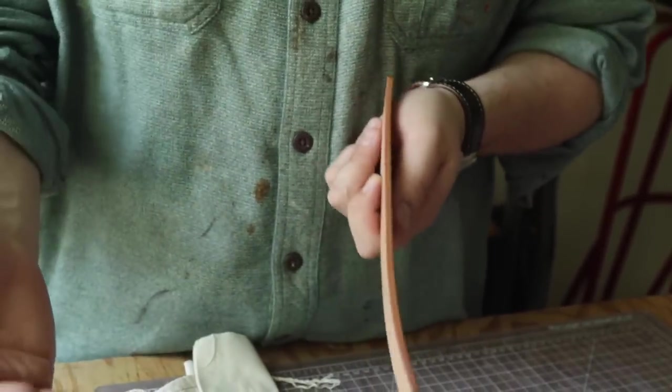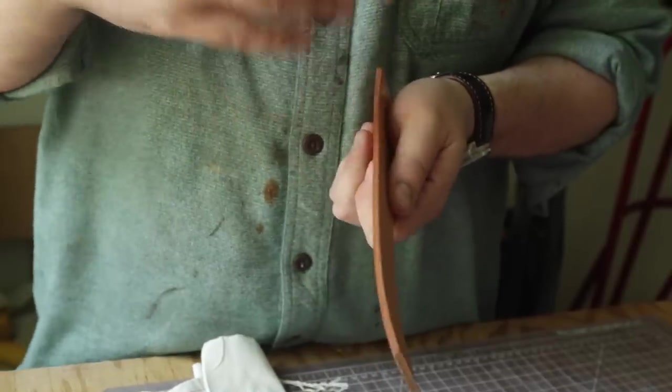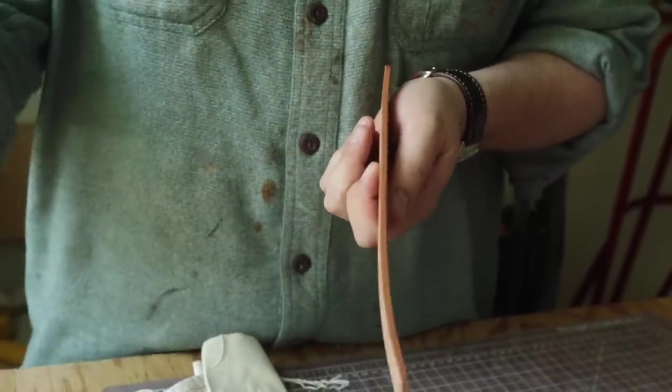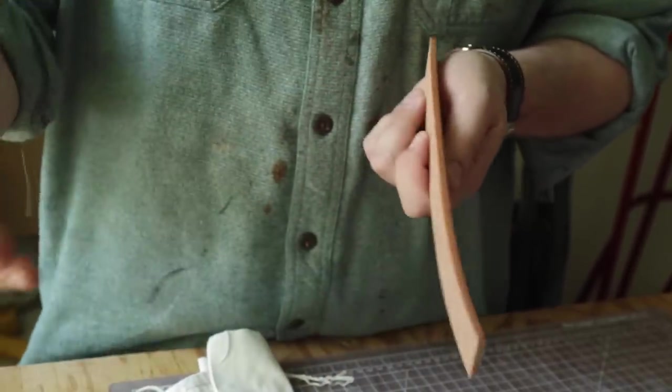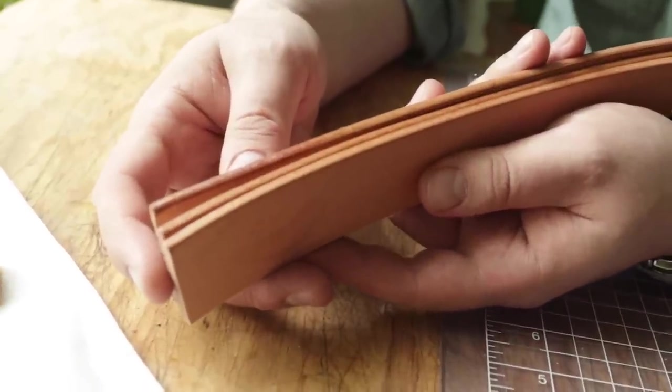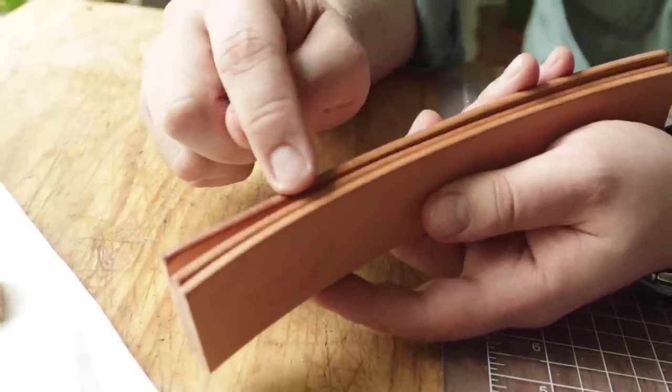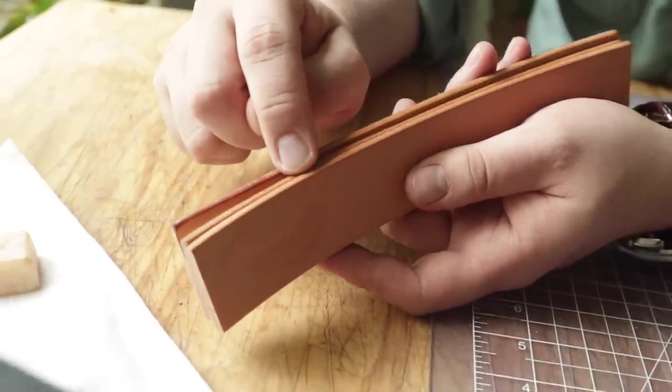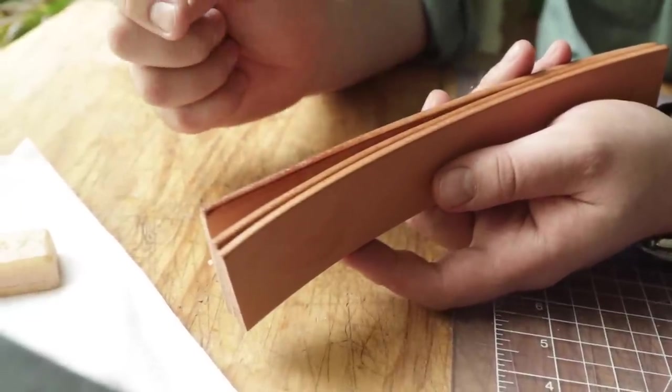So let's go and look at all three of them, talk about some pros and cons of each, and then we'll throw a coat of wax on and see what they all look like. So here are three. Can you guess which one is which? So this is the water, center is the gum trag, and this one on the outside is the tokonole.